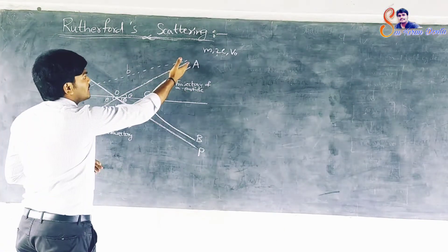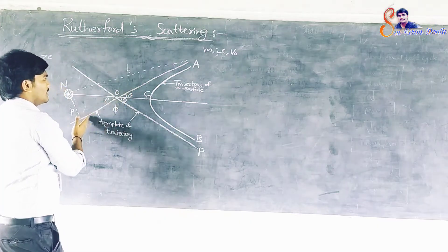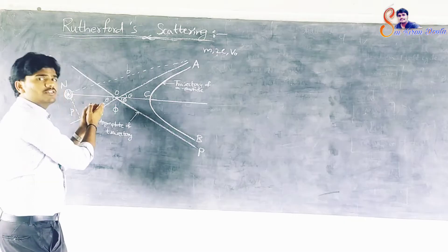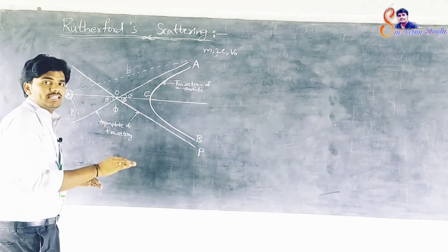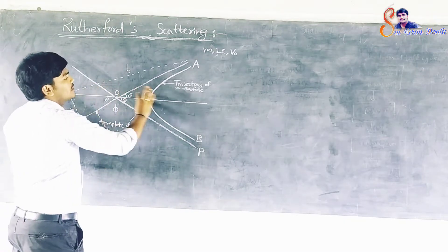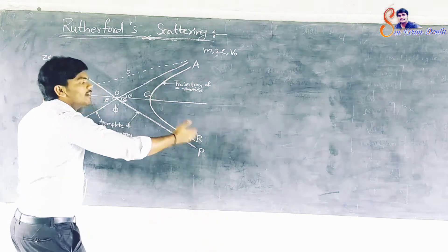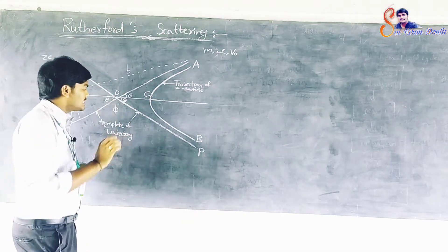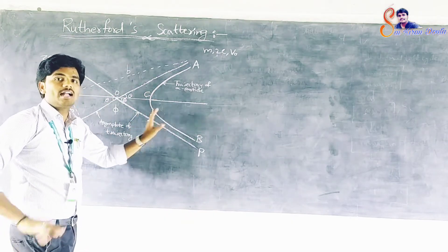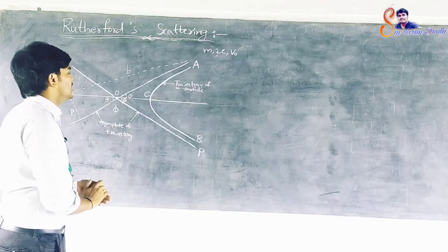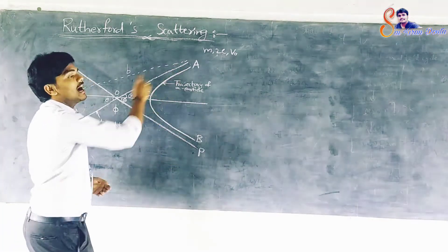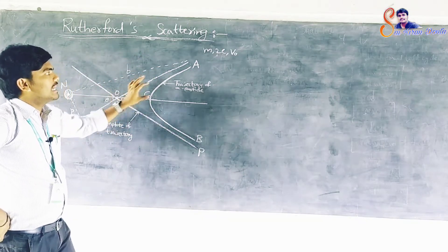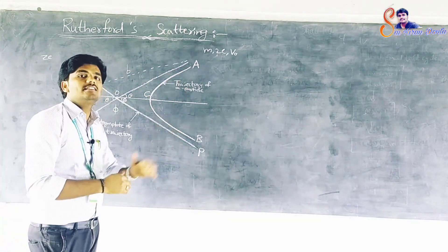Due to the Coulombic force of repulsion, the alpha particle follows the hyperbolic path ACB with nucleus N as its focus. The lines AO and PO are the asymptotes of the hyperbola and represent approximately the initial and final directions of the alpha particle.